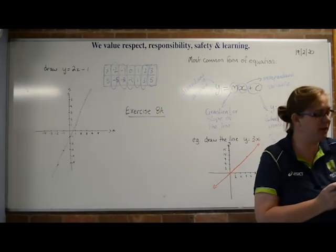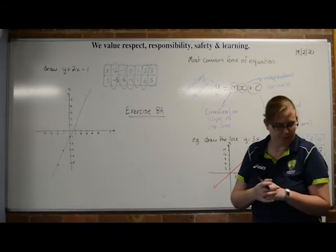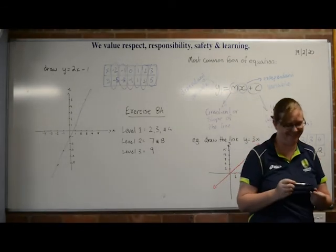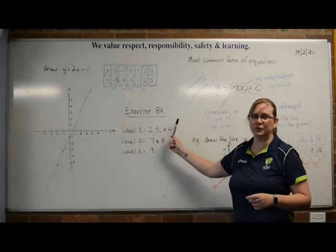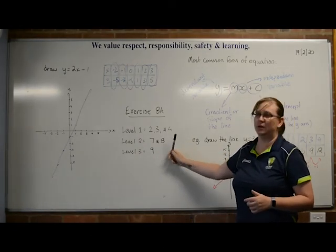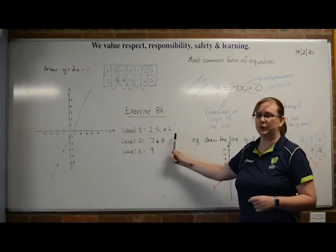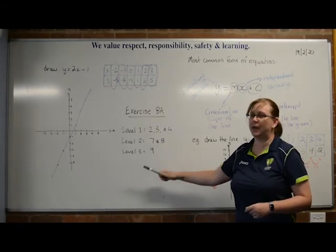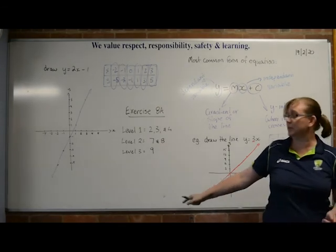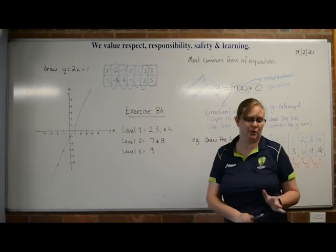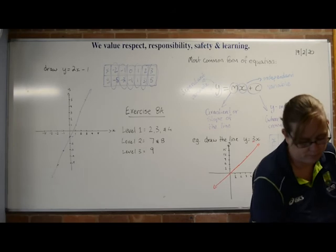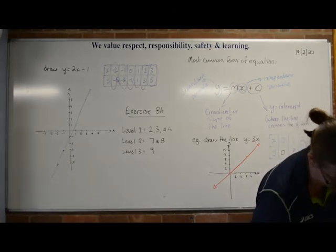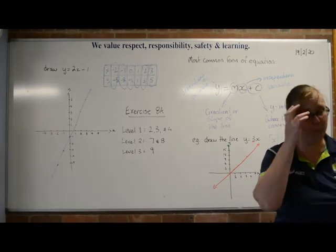So we're going to do exercise 8A — you need to come and grab a textbook. These are the levels: if you're only wanting to do level 1, it's questions 2, 3, and 4. Level 2 is also level 7 and 8. And level 3, for those who are aiming for a band 5 or 6, you need to get up to question 9. Page 296.